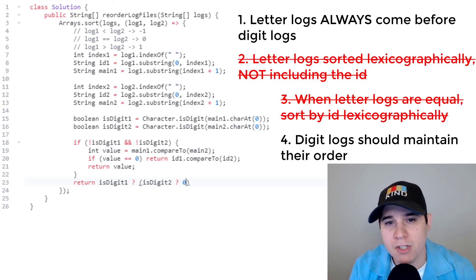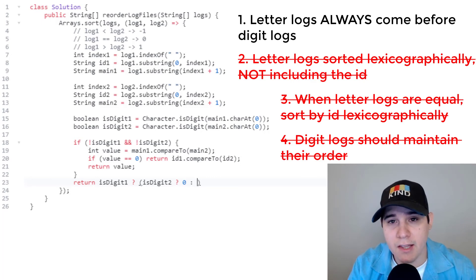In this scenario, we are pretty much saying don't touch them at all, leave them in the exact positions that they already are. So that handles that rule. If is digit two is false, meaning that log two is a letter log, letter logs always come before digit logs. So that means that log one would be greater than log two. So we'd return one.